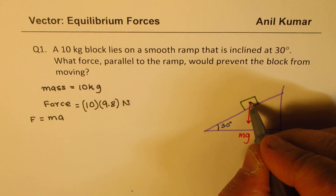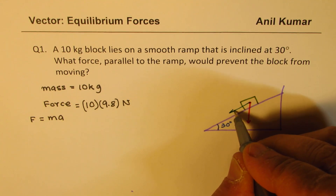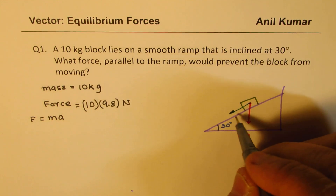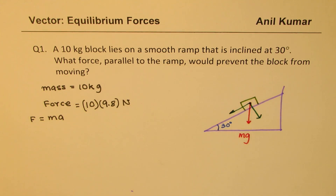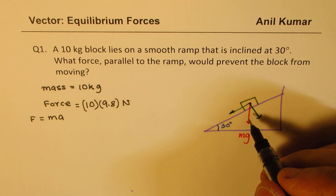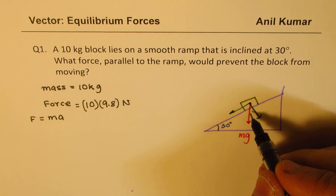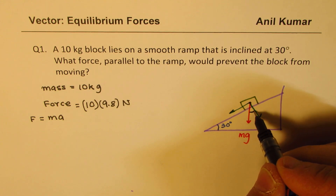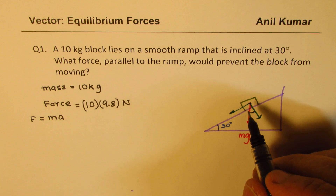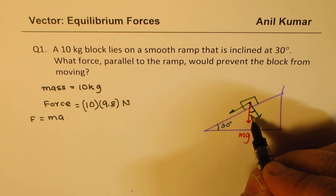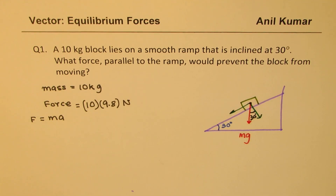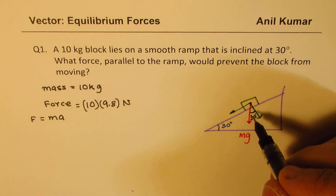This weight can be resolved into two components: one along the surface, because we want to consider movement along the surface, and the other perpendicular to it. In this diagram, we have 90 degrees here, this angle is 30 degrees, and the angle the force makes with this direction is 60 degrees. The component normal to the plane does not help move the block downwards.